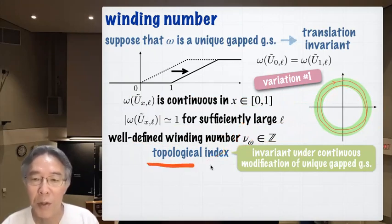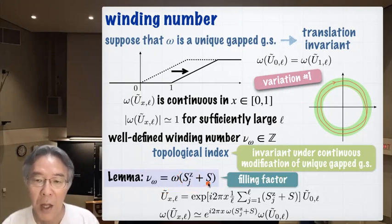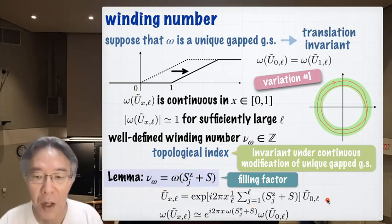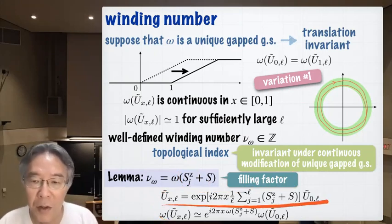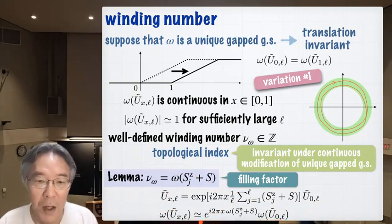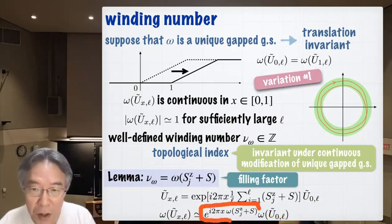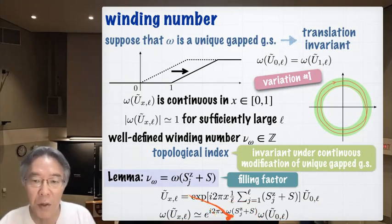We can further show that this winding number equals the expectation value omega(S^z + S), known as the filling factor. Here's the quick derivation: starting from the relation from the definition, taking the ground-state expectation value of both sides, the left-hand side gives nu and the right-hand side yields the filling factor after separating the x-dependence, which appears only in the exponential factor.